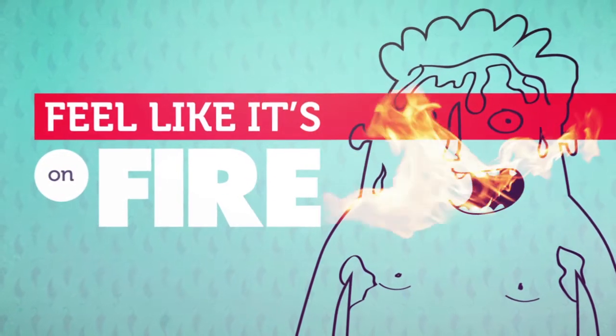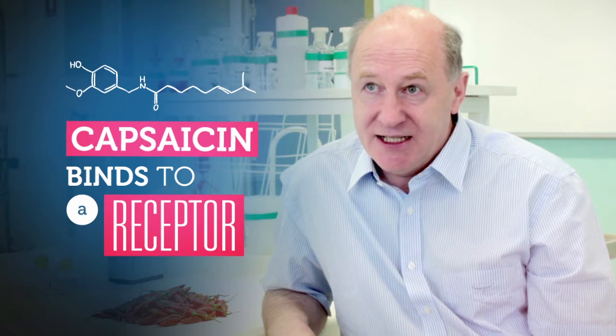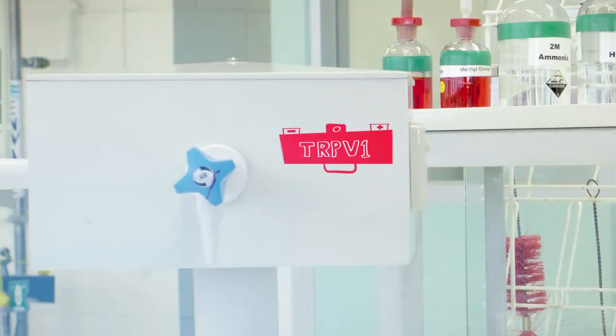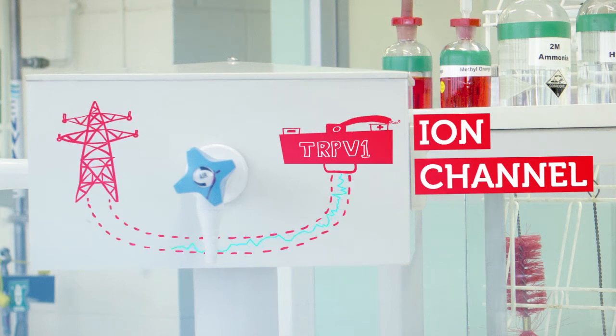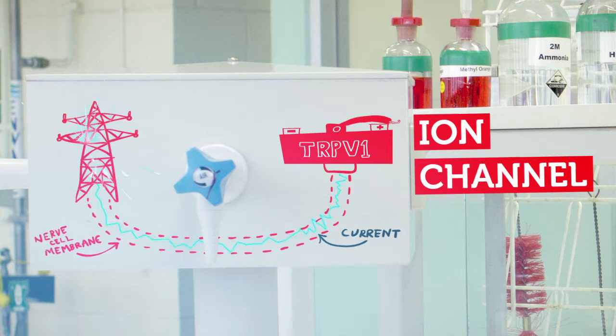It hurts so much that you feel like you're burning. Chilies hurt because they contain a substance called capsaicin, which binds to a receptor found on some pain-sensing nerve cells. That receptor's called TRPV1 and it's an ion channel. When capsaicin binds to it, it opens and allows a small current to pass across the nerve cell membrane and causes the nerve to fire.